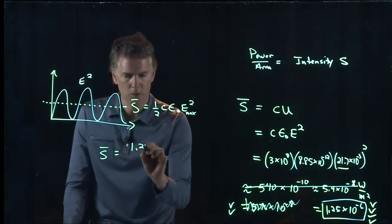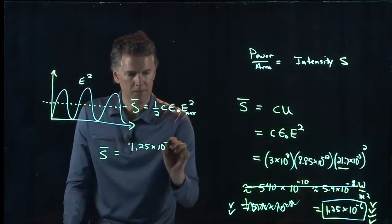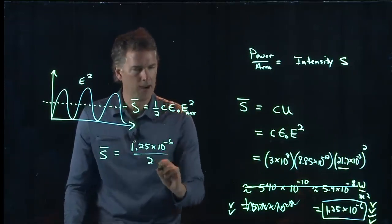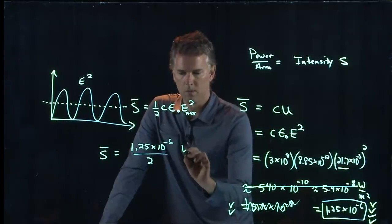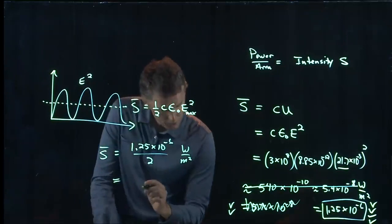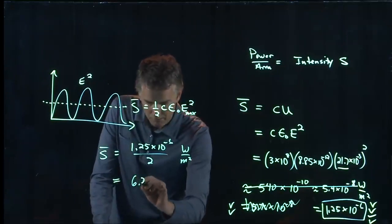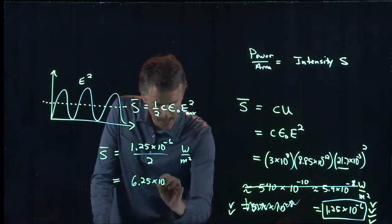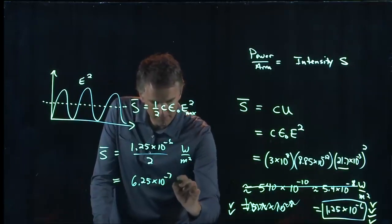So what's the answer to our question? It is going to be 1.25 times 10 to the minus 6 divided by 2, watts per square meter. And if you divide that by 2, you should get 6.25 times 10 to the minus 7.